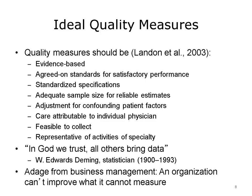There should be agreed upon standards for satisfactory performance by clinicians, and standardized specifications so that performance can be compared across different departments or institutions. There should be adequate sample size to achieve reliable estimates of quality, and some mechanism to adjust for confounding patient factors such as comorbidity and socioeconomic status. There should be measures that can be attributed to individual physicians or other practitioners, and it must be feasible to collect these measures. They should be representative of the activities of the specialty.